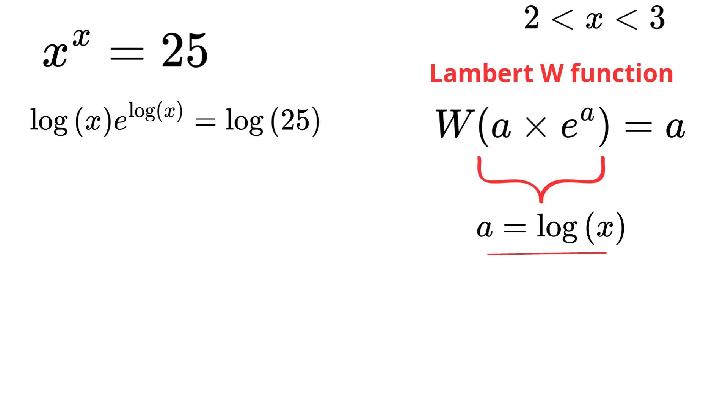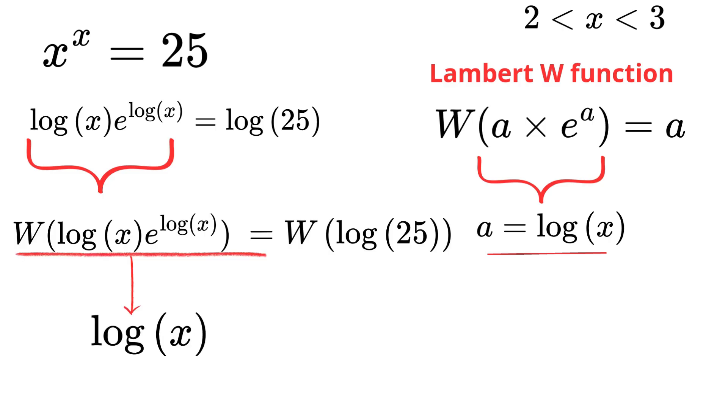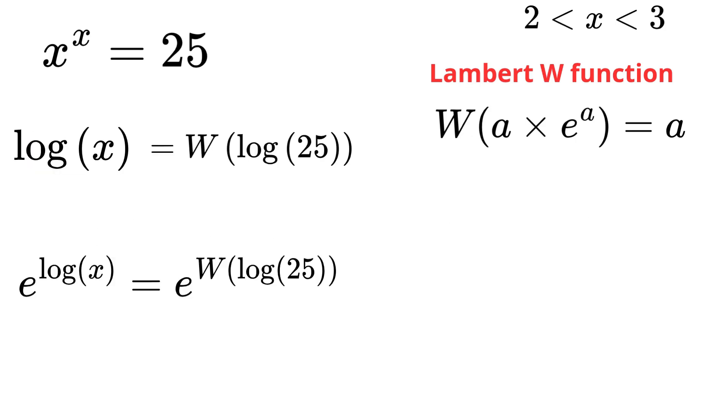Now we apply the Lambert W function to both sides. So the natural logarithm of x is just the Lambert W of the natural logarithm of 25. Exponentiate both sides to isolate x, and that's our solution in exact form.